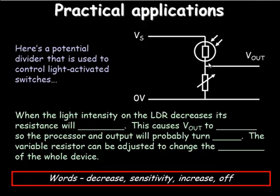Hopefully you've got some answers now, so I'll read it through. When the light intensity of the LDR decreases, its resistance will increase. This causes V out to decrease, so the processor and the output will probably turn off. The variable resistor can be adjusted to change the sensitivity of the whole device. So you're still in some control of the device. So there's a practical application.